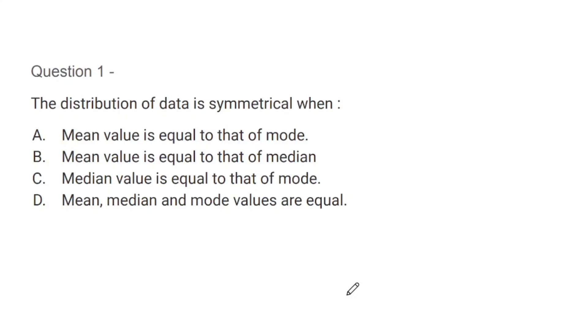Question number 1: The distribution of data is symmetrical when - mean value is equal to that of mode, mean value is equal to that of median, median value is equal to that of mode, or mean, median and mode values are equal. When is the data distribution symmetrical? The correct answer is D, that is when mean, median, and mode values are equal, then we can say that our data is symmetrical.